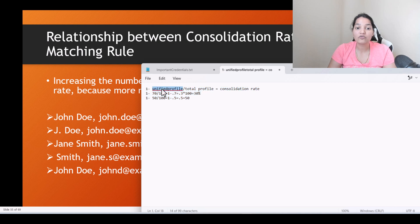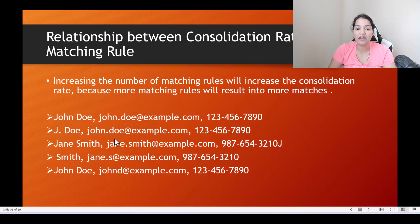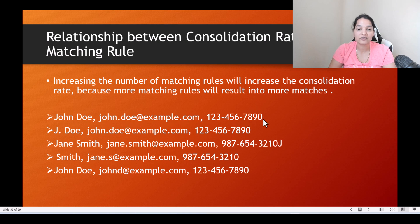Now what will increase or decrease the number of unified profiles? Let's look at an example with customer data. We have John Doe from one system with email john.doe@example.com and a phone number. Similarly, j.doe with a different email and phone number — these are different contacts coming from different systems.